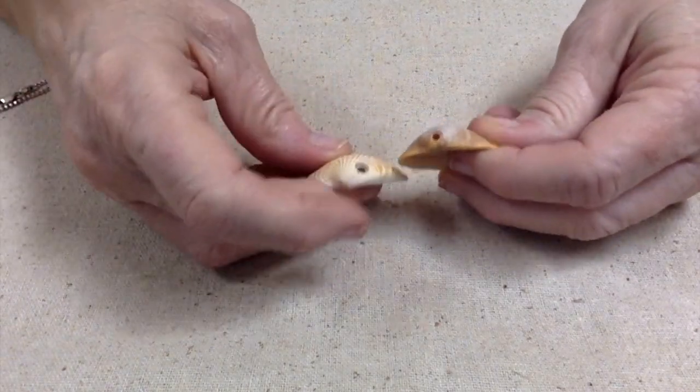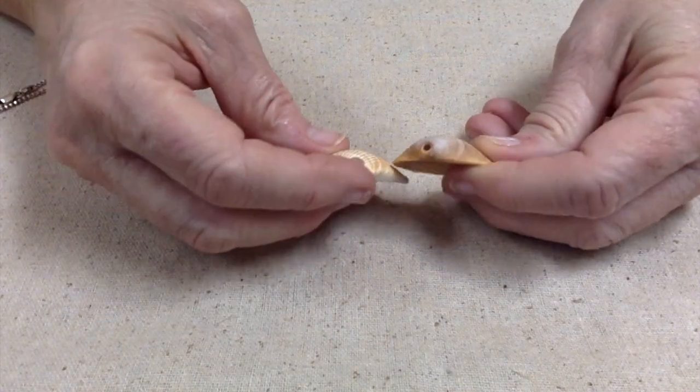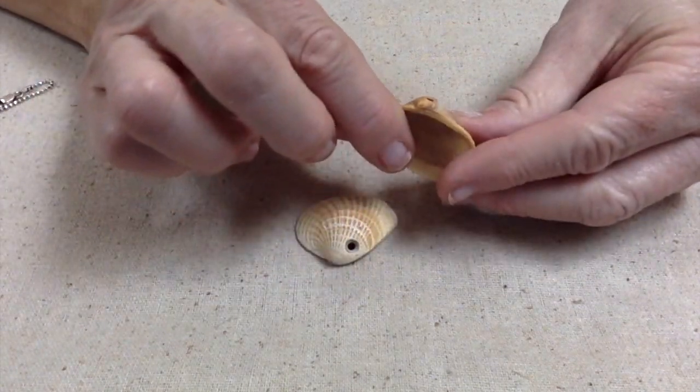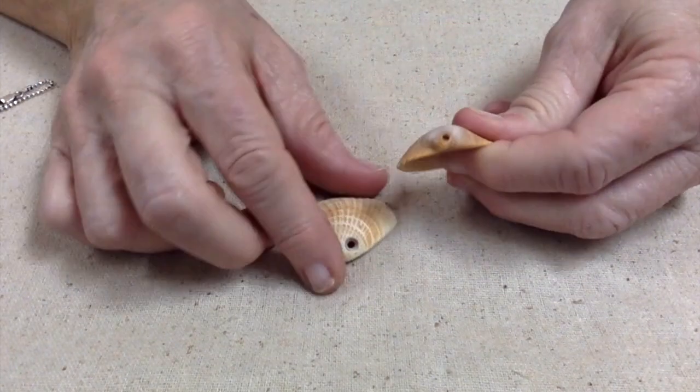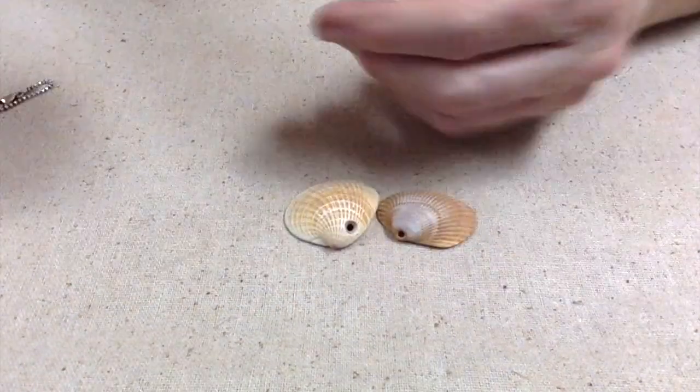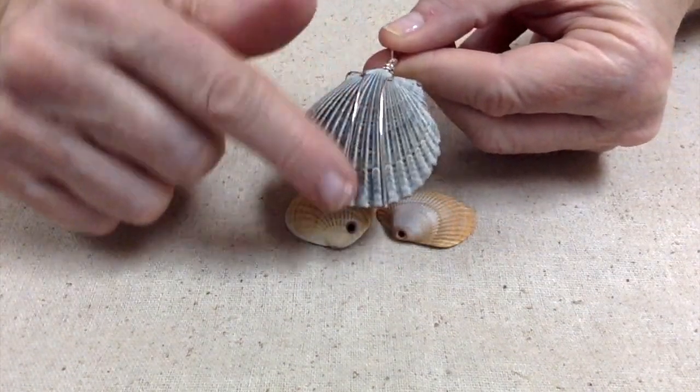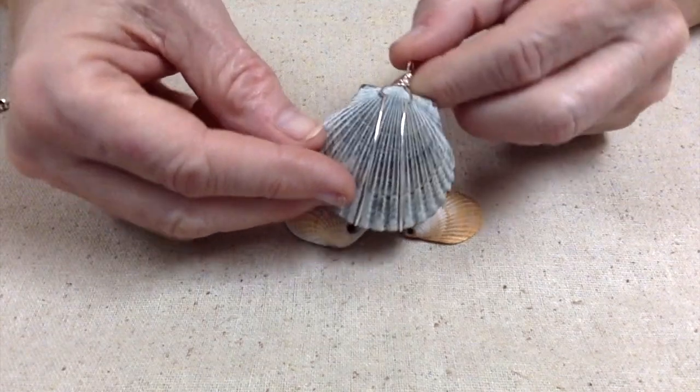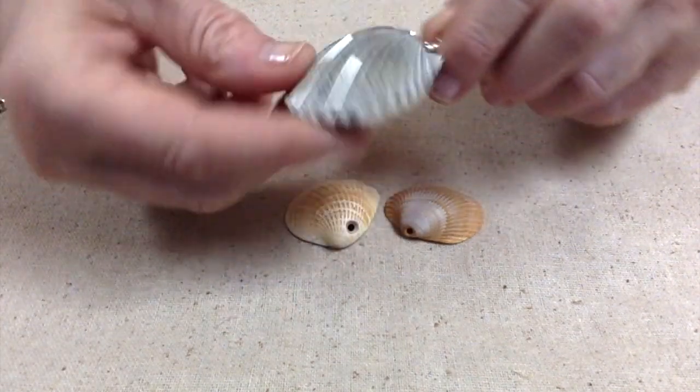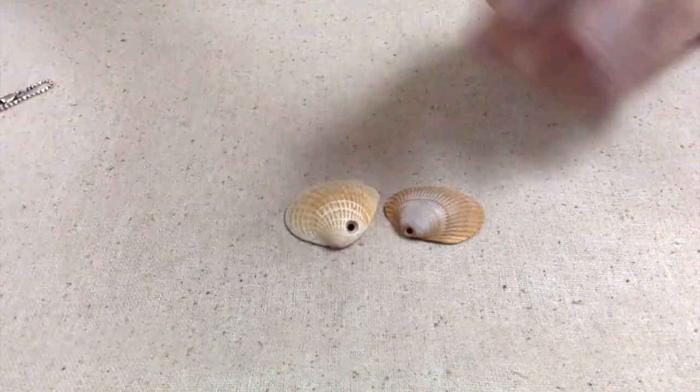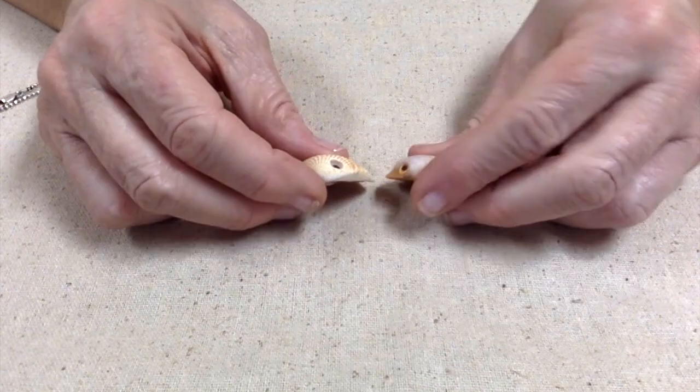A lot of shells come with holes already in them and that makes it a lot easier to wrap. Some don't and you have to wrap them this way, but we're not going to do this today. This will be another video. This one is a lot harder. The one I'm getting ready to show you is a lot easier.